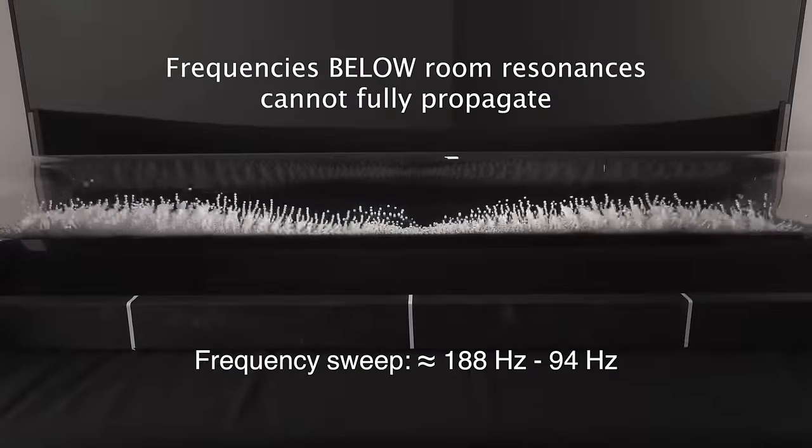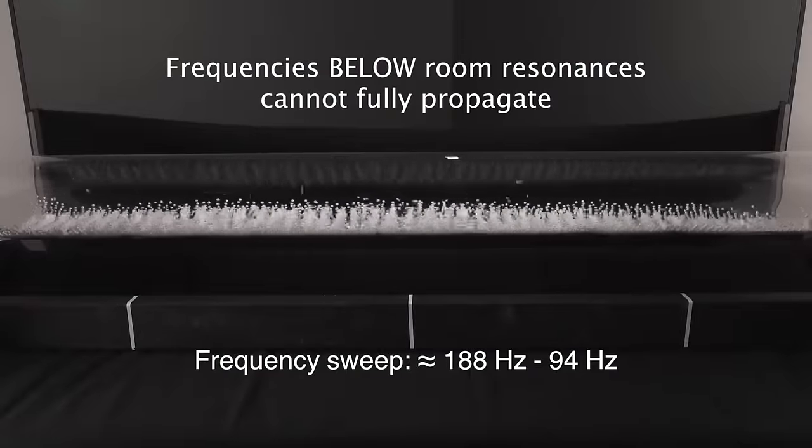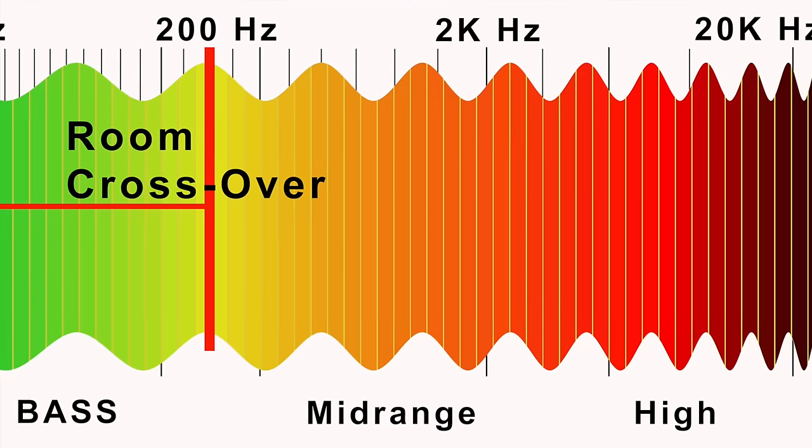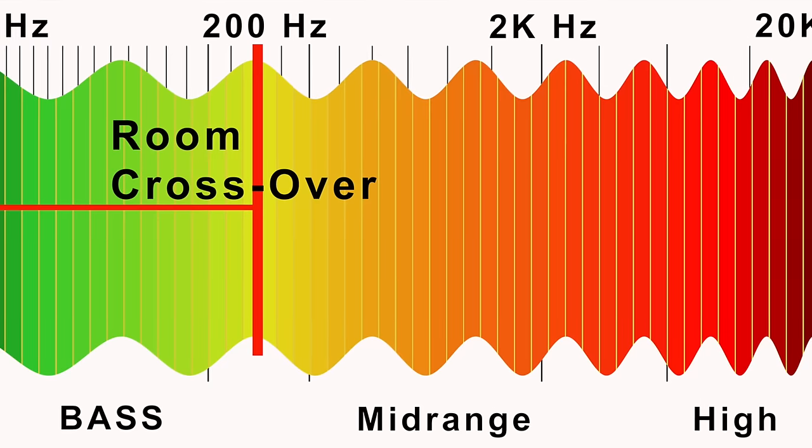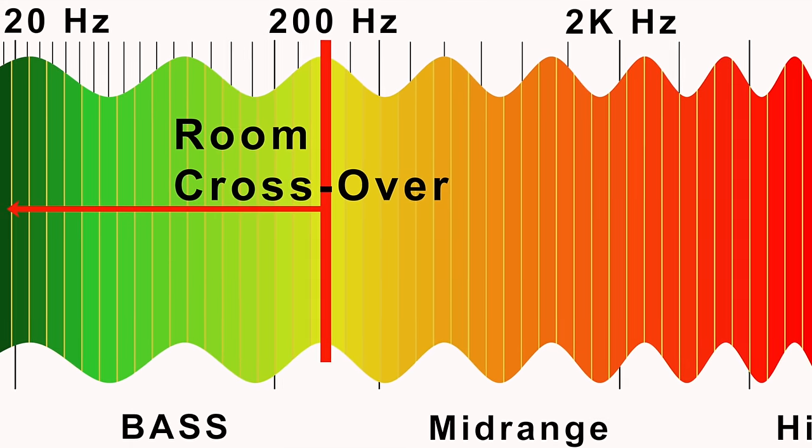Third, when low-frequency wavelengths become longer than room dimensions, they can't fully develop. This is called the room crossover, usually around 200 Hz, where sound transitions from velocity-based to pressure-based.